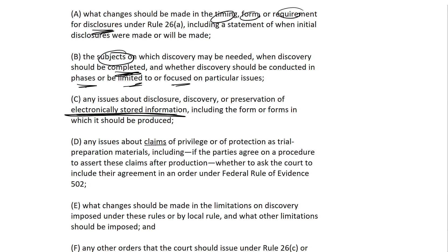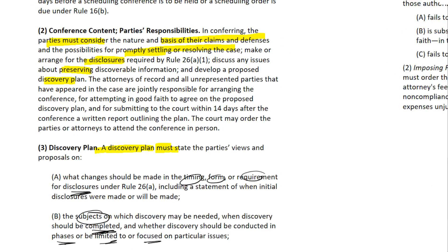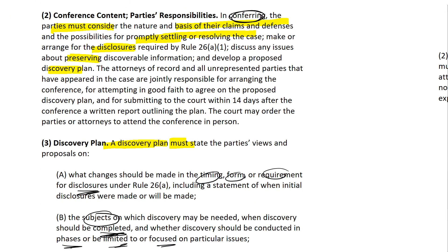Another topic is claims about privilege or protection. We've already talked about privilege and work product. If there are any special issues regarding that, sometimes people will come forth with a proposed protective order for dealing with confidential information for the judge to sign off on. Any other changes about limitations in discovery and any other orders may also be addressed. So as you can see, the goal of the conference is partly to get parties to maybe settle or resolve, hash out discovery and disclosure issues, come up with a plan, and submit that plan to the court.